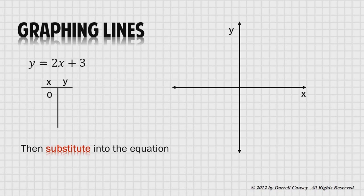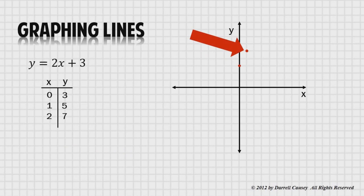The answer is 3. Put the 3 with the 0 and do this two more times to get two more points. Plot these three points and draw a line through the points to create the line graph. That's all there is to it.